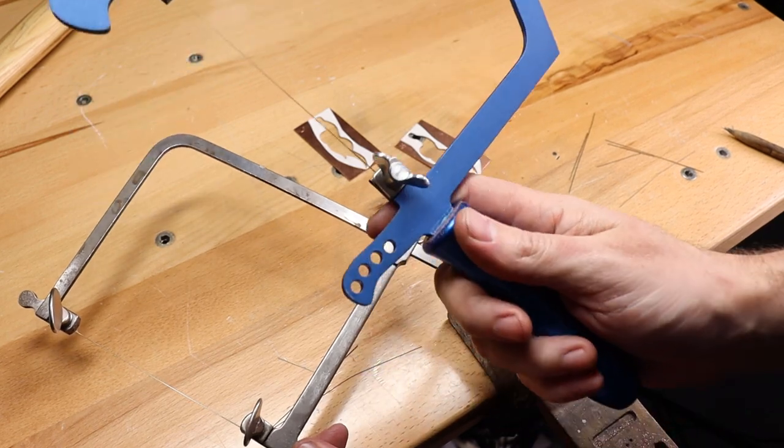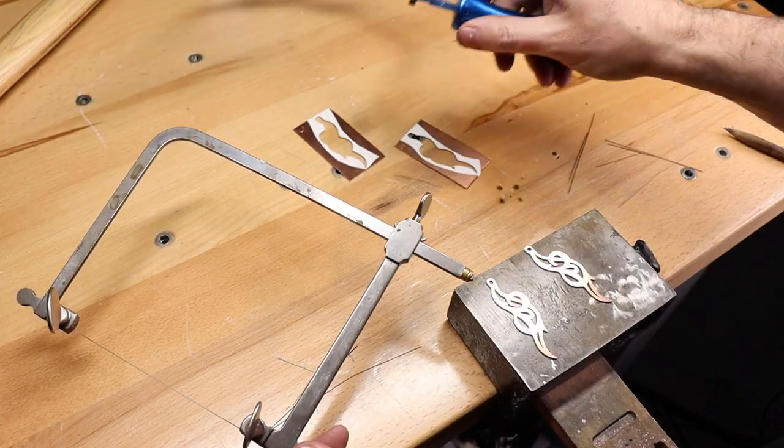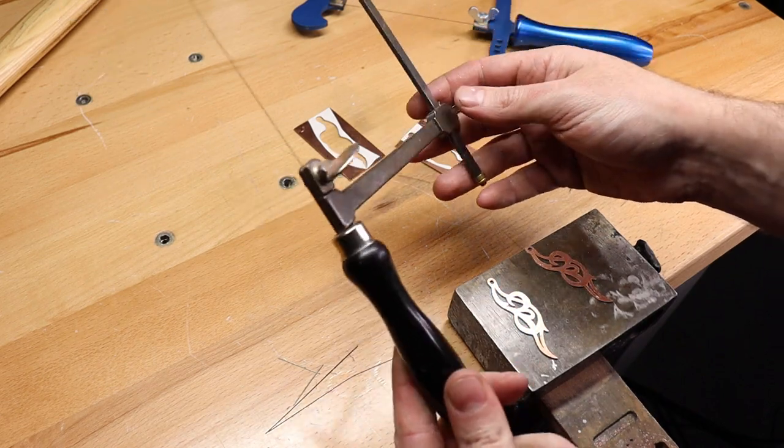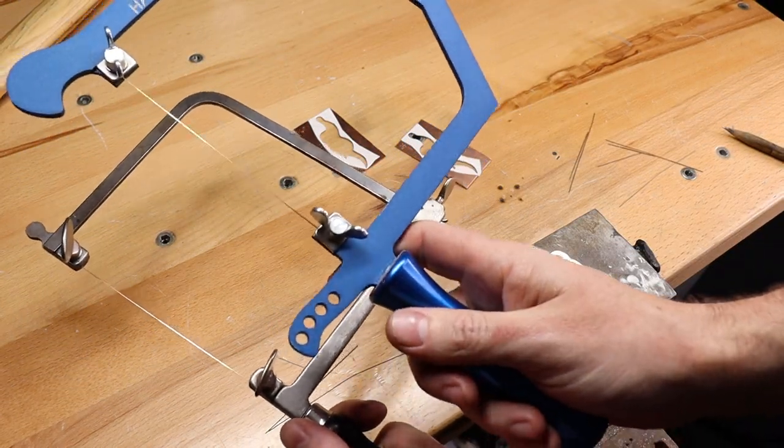So yeah, the Haymaker is heavier. It is 7.3 ounces. And this comes in at 5.8. So even with this one being a bit heavier, it's still more comfortable to use than this.